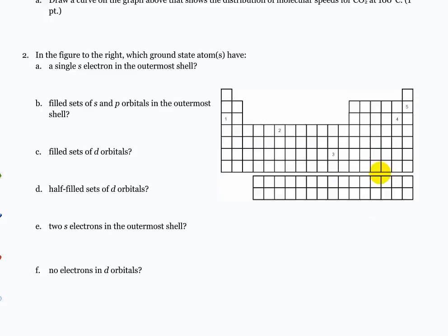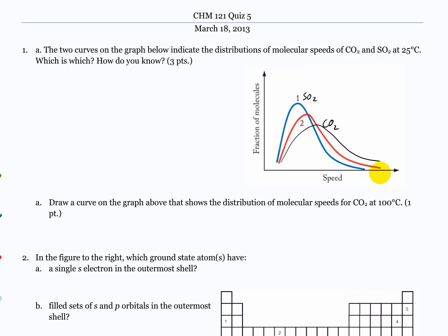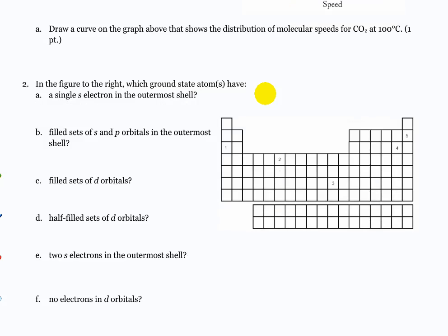I thought it would be higher because the temperature is so much higher. The temperature is higher, but think about what 'higher' means — higher tells you fraction of molecules. As the temperature goes down, it'll get higher because there will be less of a spread of velocities; they'll have more similar velocities. The speed is quicker, but 'higher' is not the most appropriate term.